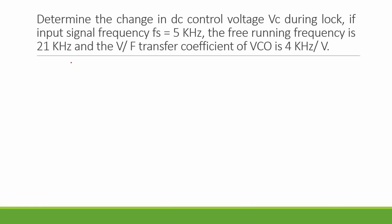Let me write the data that has been provided to us. We have to calculate the change in DC control voltage represented by del Vc. Data given to us is input signal frequency Fs is given as 5 kHz.